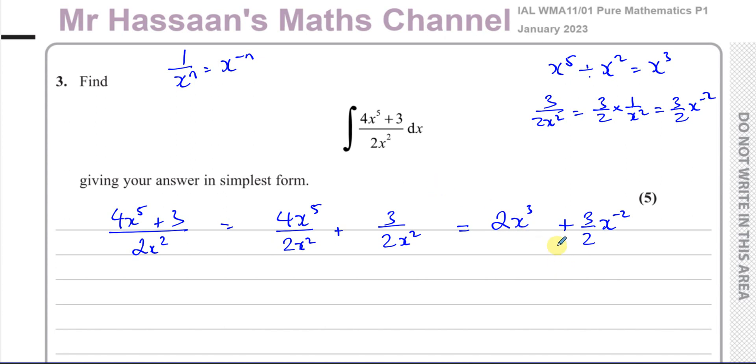So now what we've done is we've prepared this expression to be integrated. Now I can integrate this as 2x cubed plus 3 over 2x to the power of minus 2 with respect to x.